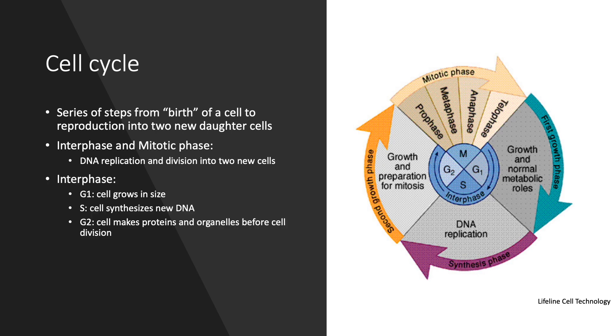Interphase consists of phases G1, S, and G2. During G1 phase, also known as first gap phase, the cell grows in size and copies organelles in order to prepare for the following steps. S phase refers to the synthesis and this is when the cell copies and synthesizes DNA.